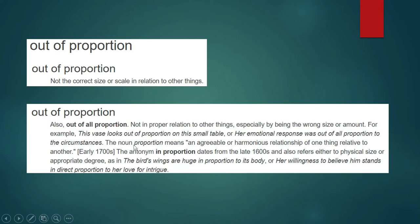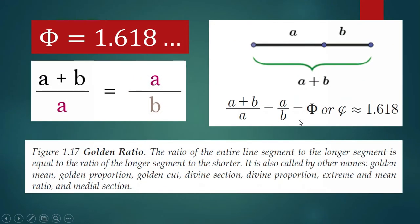So let us look into the meaning of being in proportion. If being out of proportion means not having the correct size or scale in relation to other things, then being in proportion means an agreeable or harmonious relationship of one thing relative to another — that is like saying something looks good, something looks pretty. And something that is in proportion looks even more beautiful if that proportion is equal to the golden ratio.